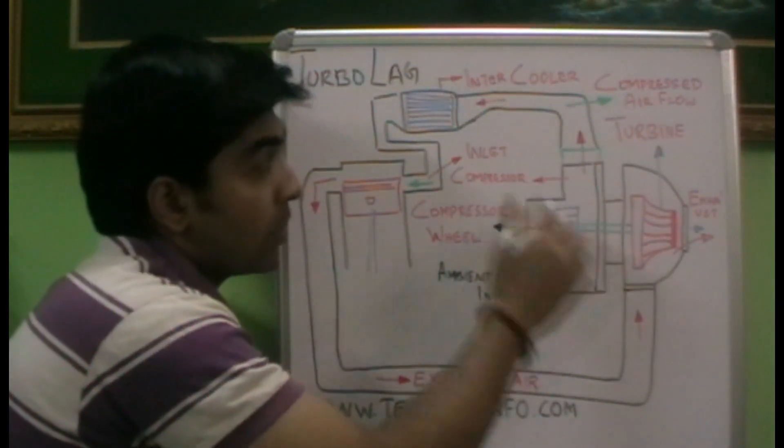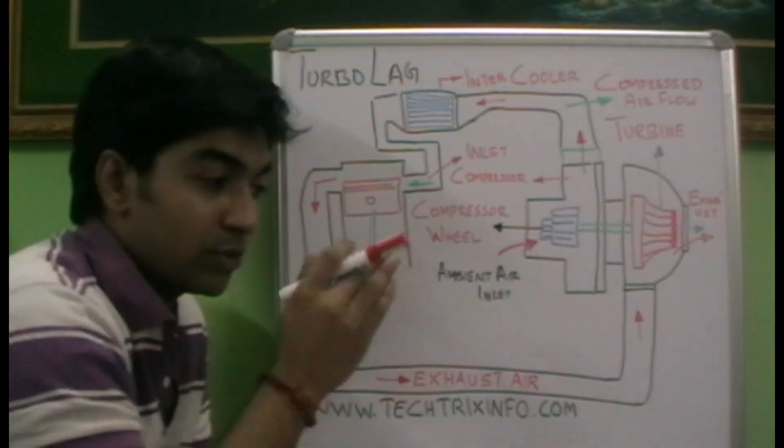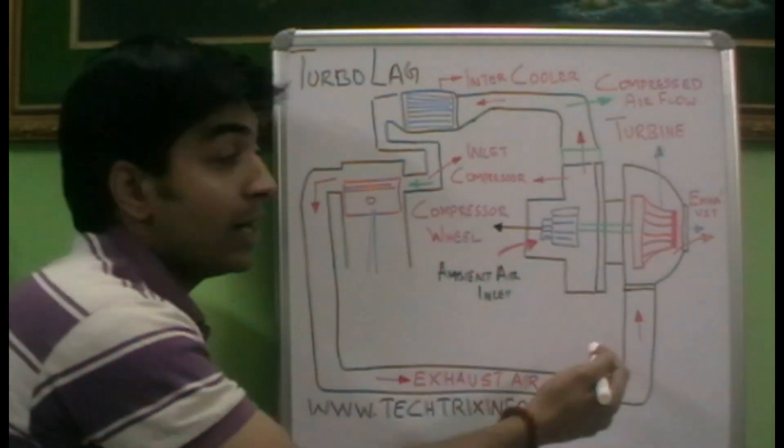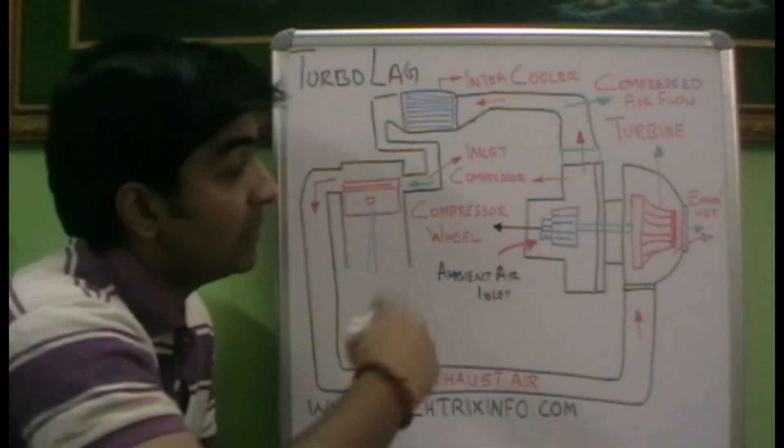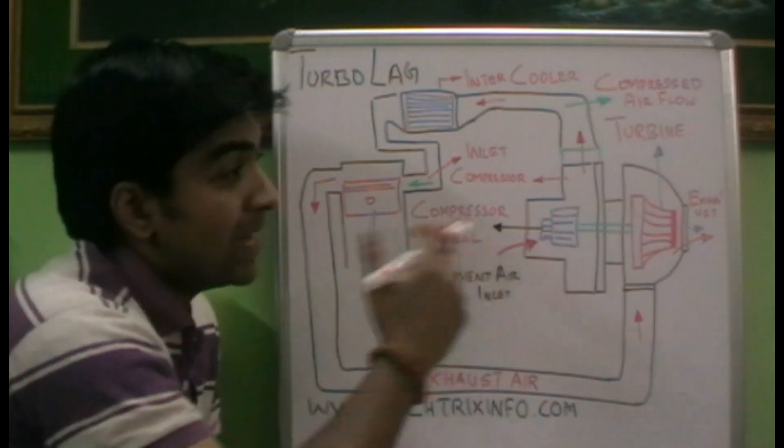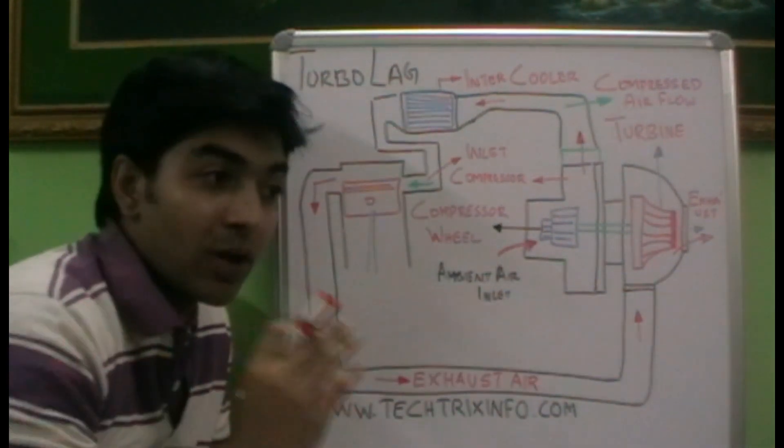This is because the exhaust gas which is coming will not have that much velocity to make the turbine rotate to the requirement for producing that additional boost. A time gap is there to attain that, so that gap involved in this process of producing the power is called the turbo lag.